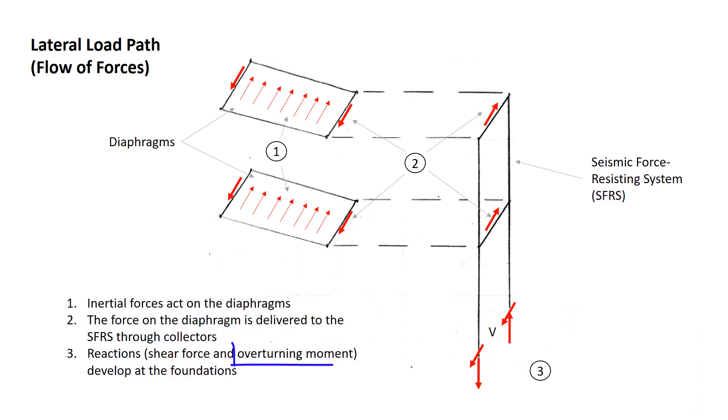The overturning moment is resisted by tension on one side, compression on the other. This isn't a complicated idea. It doesn't need a long video. But keeping this topic in mind as we get into more complicated aspects of the seismic behavior of buildings will help avoid confusion.